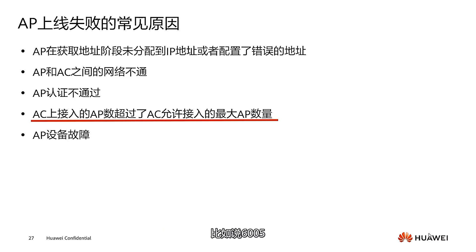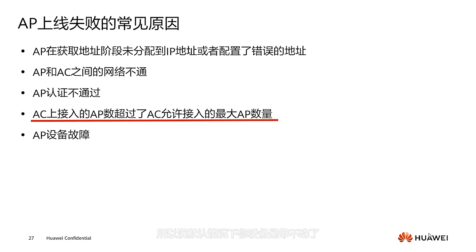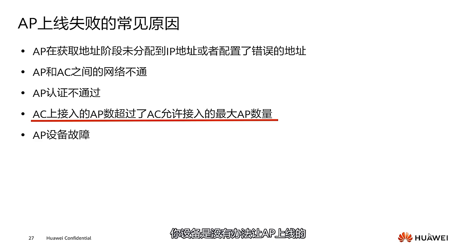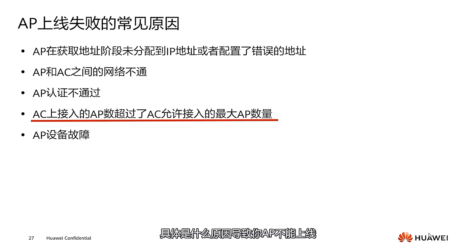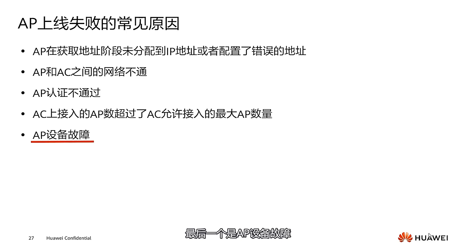For example, with older Huawei AC equipment like the 6005, it typically supports four to eight APs by default. The latest AM series, such as the 6508 or 6805 series, defaults to zero APs, so your device won't be able to bring APs online by default. You can use the 'display AP online fail record' command, which provides a complete record of online failures and explains exactly what caused your AP not to come online — for example, a license issue.